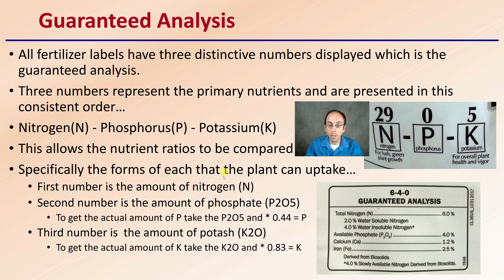The first number is the amount of nitrogen. The second number is the amount of phosphate in the form of P2O5. To get the actual amount of phosphorus, you take the P2O5 and multiply it by 0.44 to get the P. The third number is potash, K2O. To get the actual number of just potassium, take K2O and multiply it by 0.83.